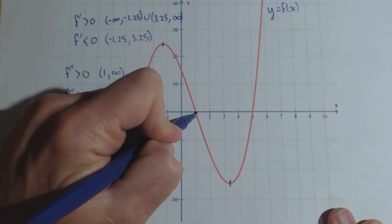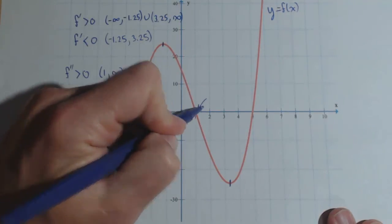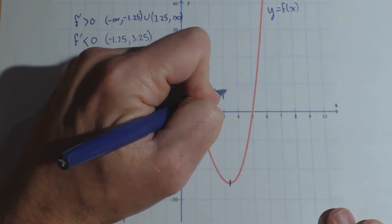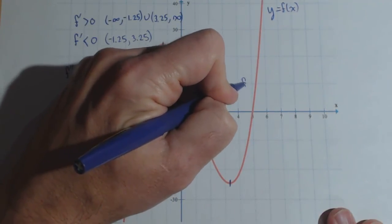This also tells us it looks like we've got an inflection point there, right where it switches concavity for this graph at about 1, 0 for an inflection point.